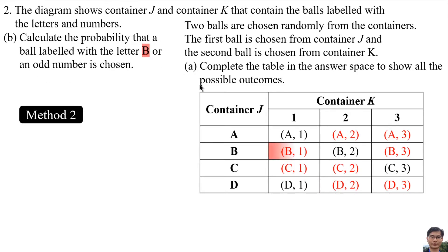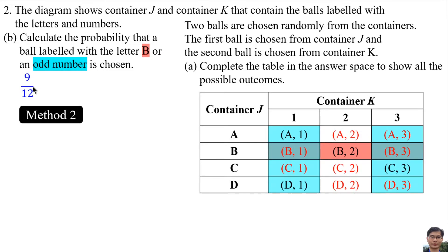The letter B means this row. The number 2 column means this column and this column. 'All' means all the highlighted possible outcomes. If 'all' changes to 'and', it means the overlapping possible outcomes — these two only. If 'all' means all the highlighted possible outcomes, the probability is 9 over 12. There are 9 highlighted possible outcomes; 12 means there are 12 total possible outcomes. Then simplify it, and the answer is 3 over 4.